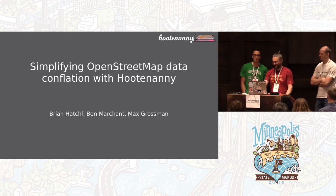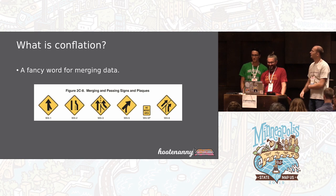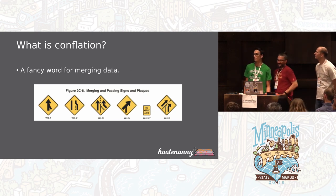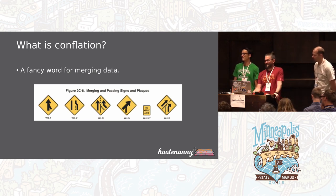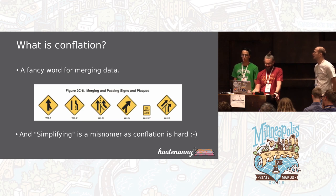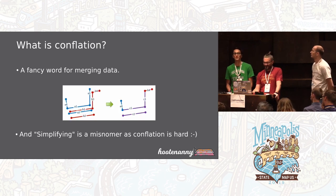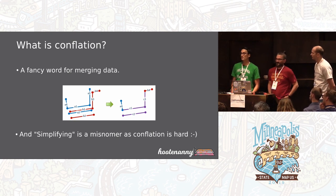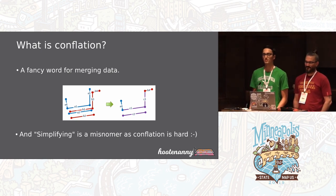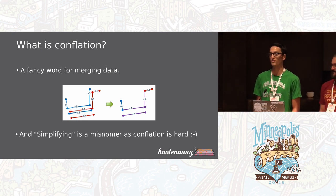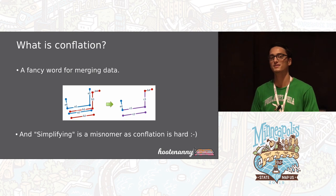Today we're going to talk about Hootenanny. Hootenanny is a conflation software, so let's start by answering: what is conflation? It's just a fancy word for merging data together. There are lots of ways to do conflation, which makes it a hard problem to solve. On the left-hand side are two data sets modeling the same actual features that we want to merge together, put through a conflation algorithm, giving us merged output data.